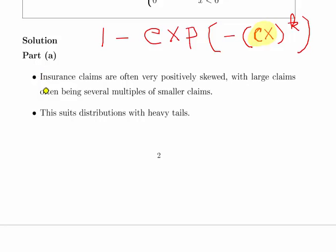Anyway, I digress. Insurance claims: this is the one for the actuarial students. Insurance claims are often positively skewed, with large claims often being several multiples of smaller claims. So this would be the type of thing that financial maths and actuarial students would be familiar with.